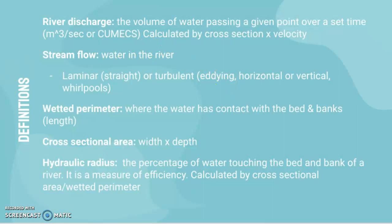The wetted perimeter is where the water has contact with the bed and bank, measured as a length. Cross-sectional area is the width times the depth of the river. Finally, hydraulic radius is a measure of efficiency — the percentage of water touching the bed and bank — calculated by dividing cross-sectional area by the wetted perimeter.